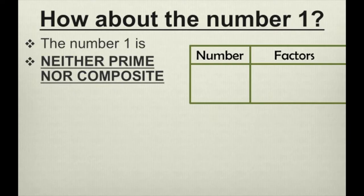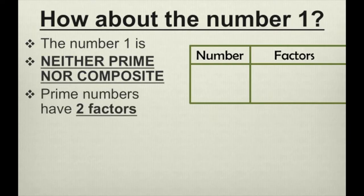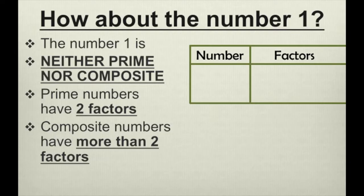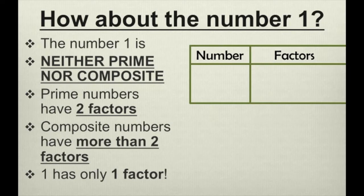And the reason why is prime numbers have 2 factors. Composite numbers have more than 2 factors. But 1 only has 1 factor — itself. Not 1 and itself. The number 1 has only 1 factor. Only 1 can divide 1. Therefore, 1 is a special case.